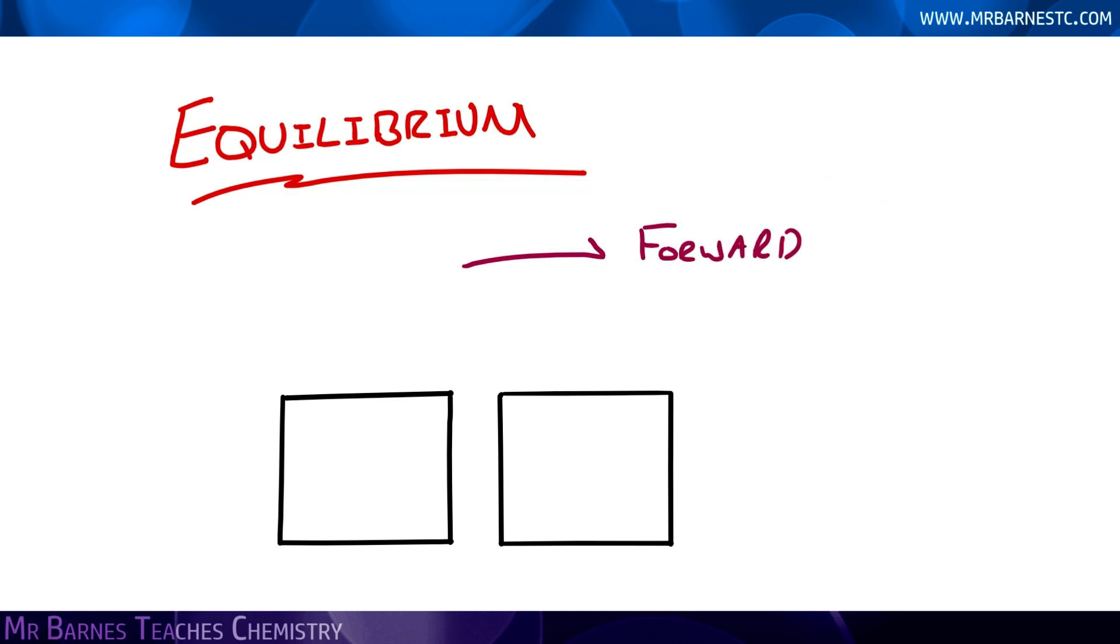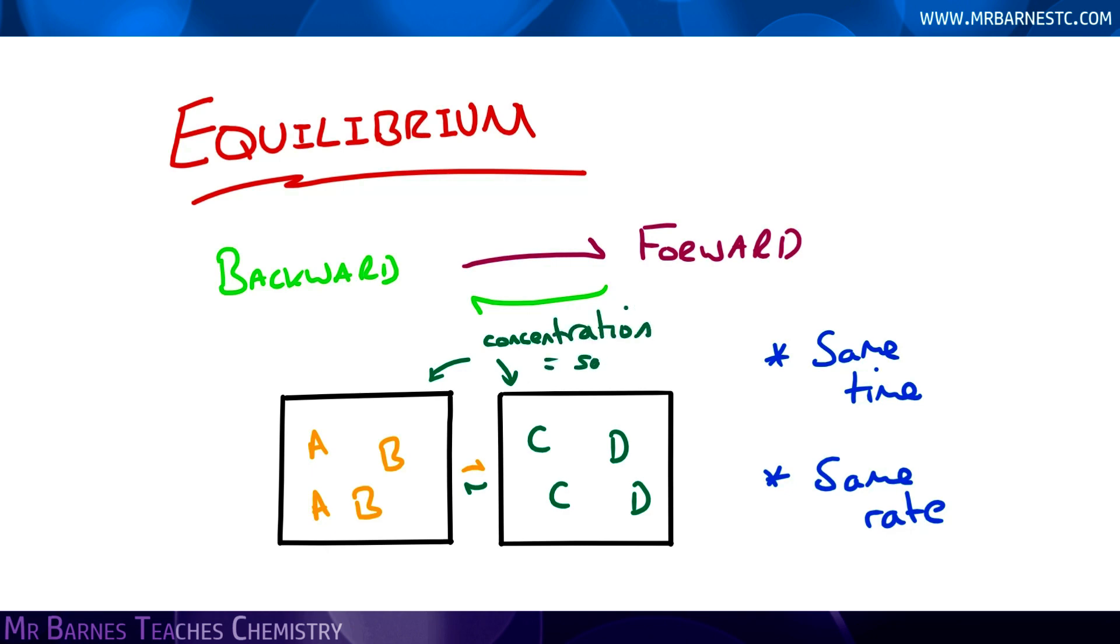When it gets to a point where the forward and the backward reactions are occurring at the same rate, so you've got the same amount of A and B forming C and D as C and D forming A and B, that's what we call equilibrium. And in an exam, if you're asked the definition for that, it is nice and simply both the forward and backwards reactions are occurring at the same rate.